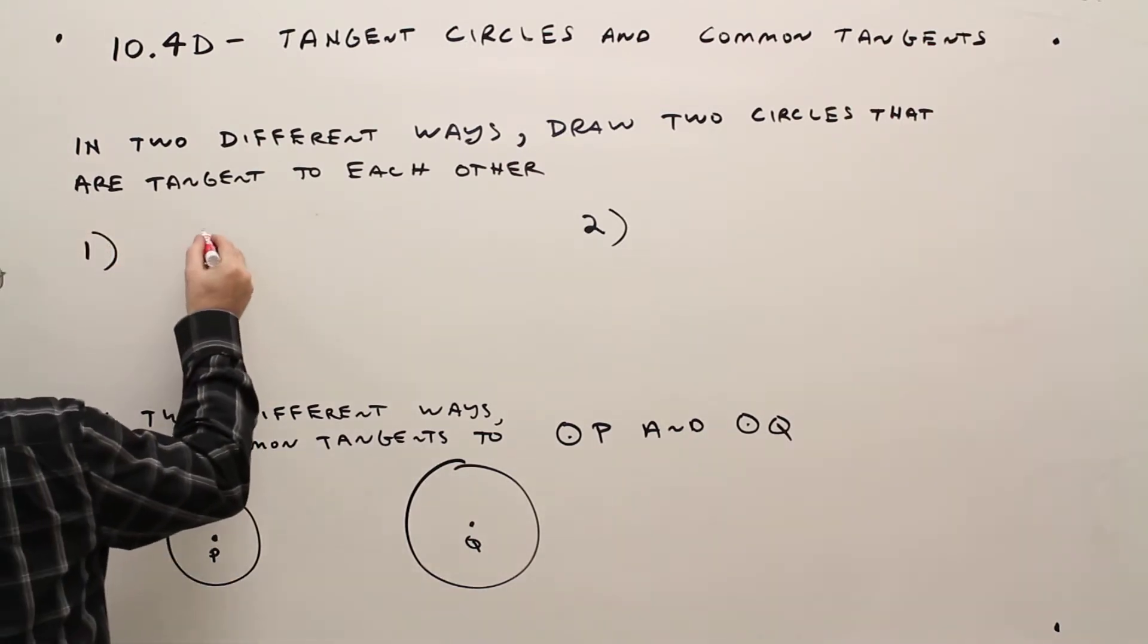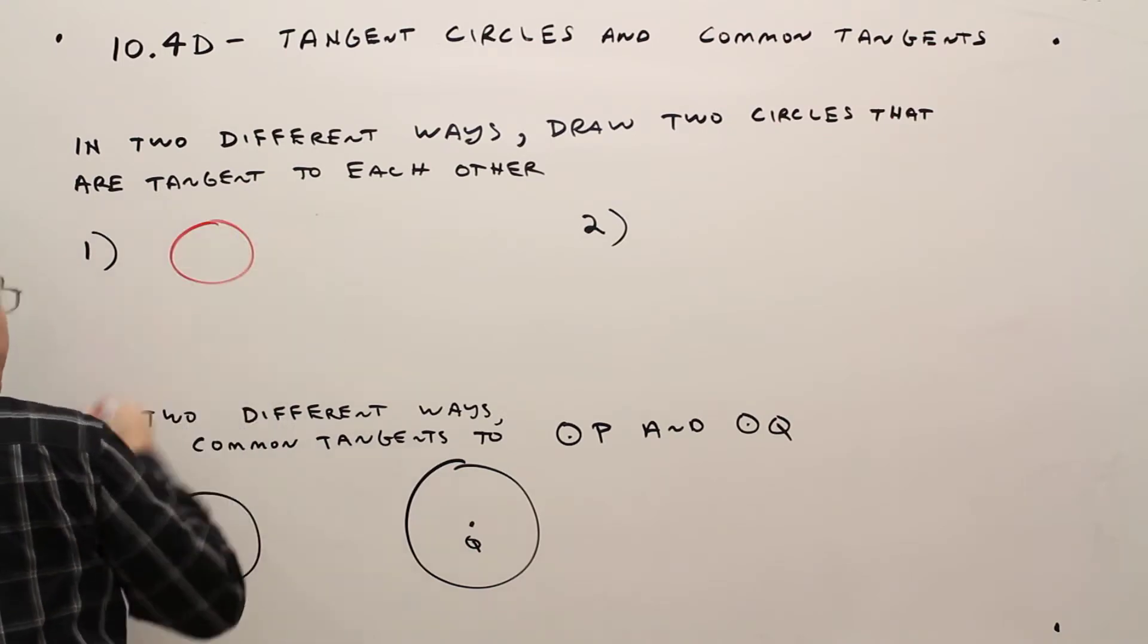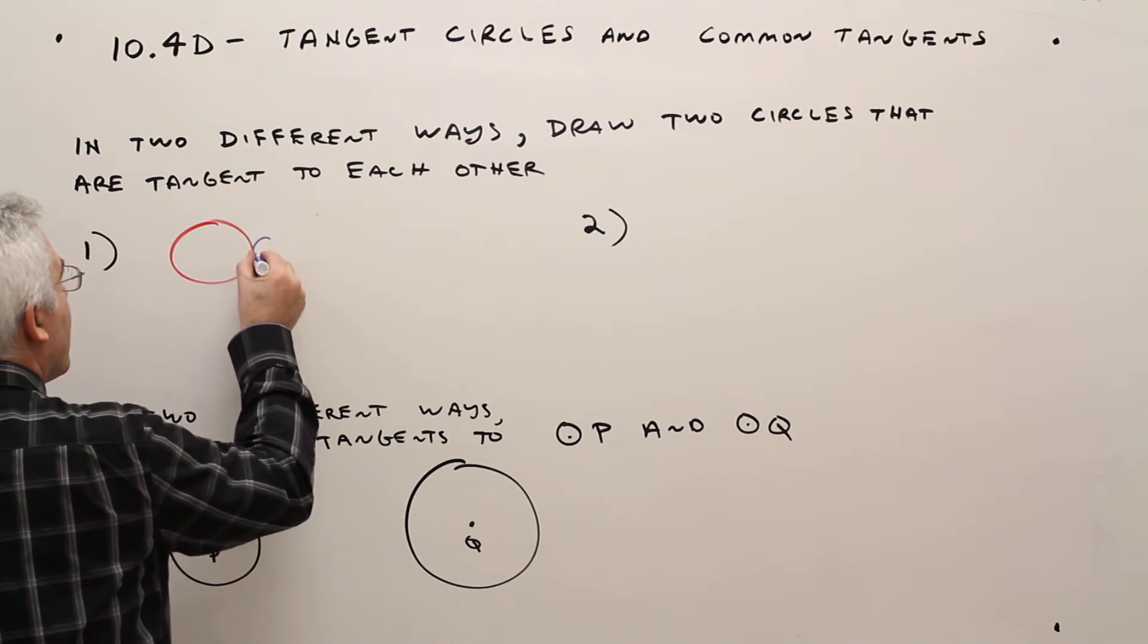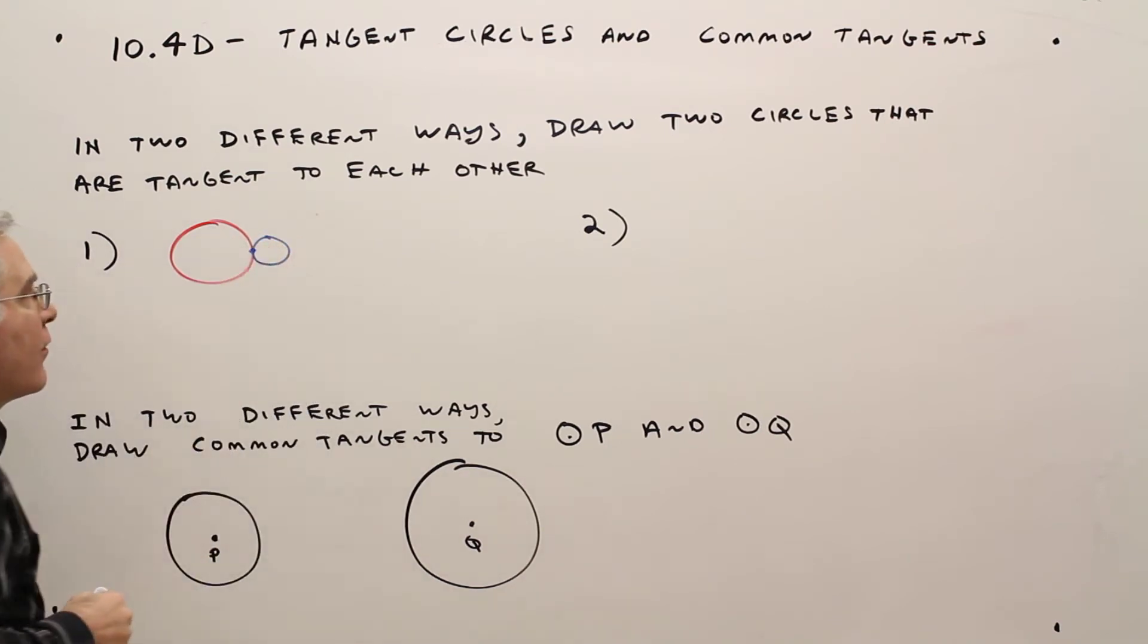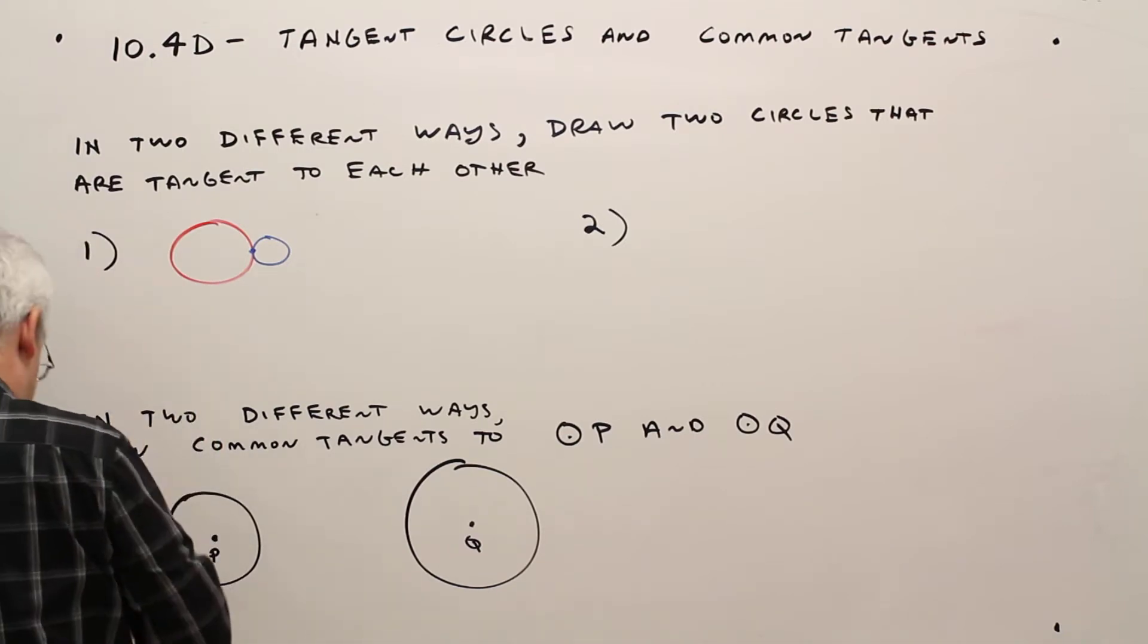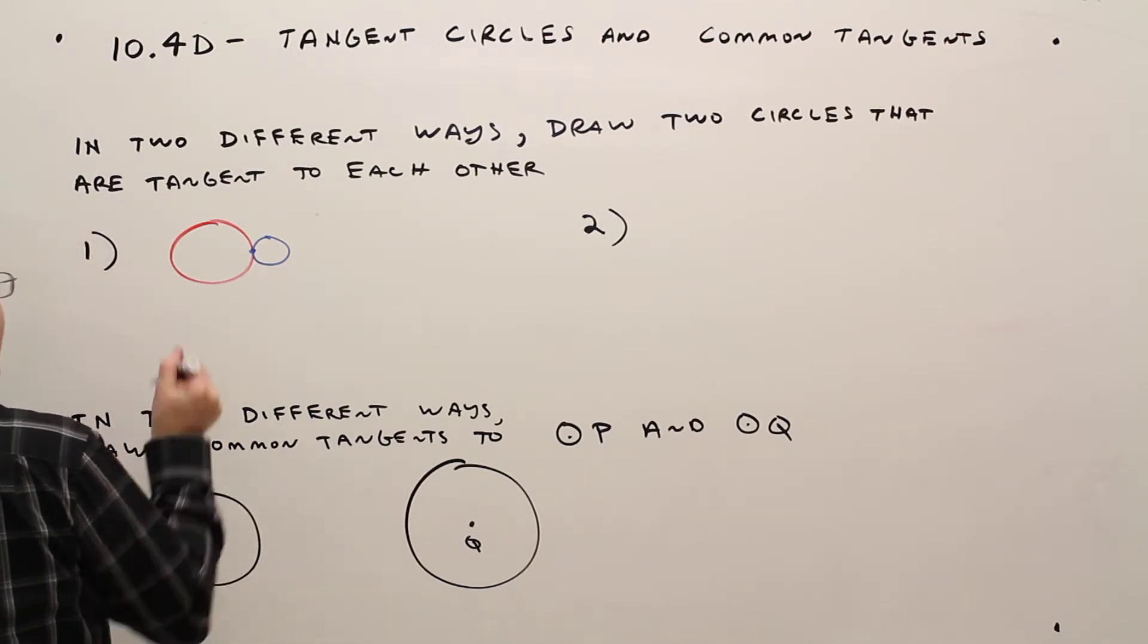Okay, I think most people would think of circles like this, perhaps. So, circles just touching on the outside, and we call those externally tangent.